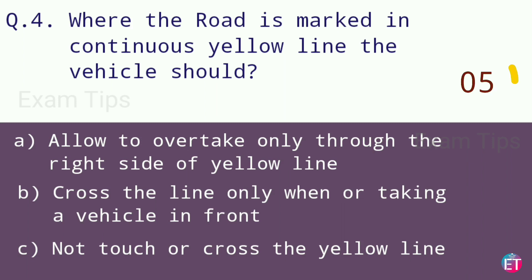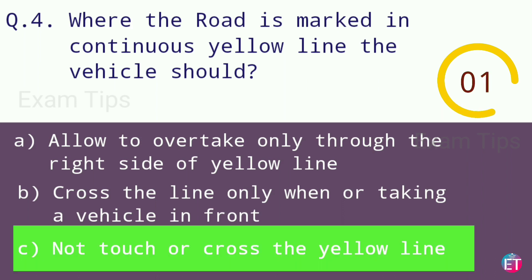Where the road is marked with a continuous yellow line, the vehicle should not touch or cross the yellow line.